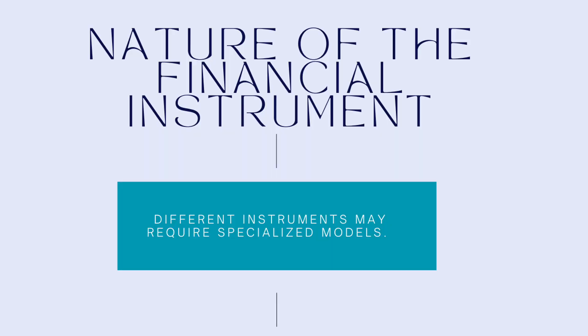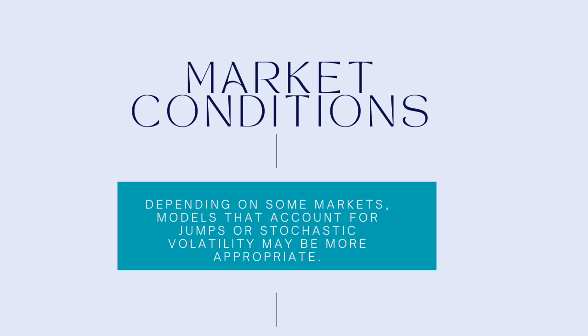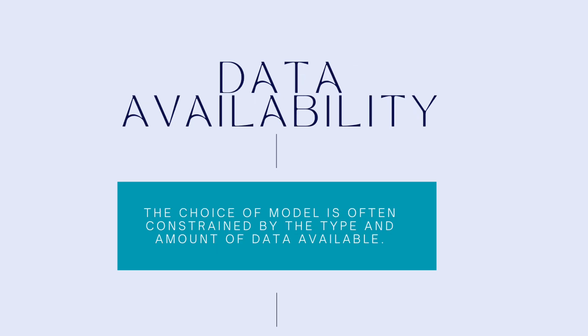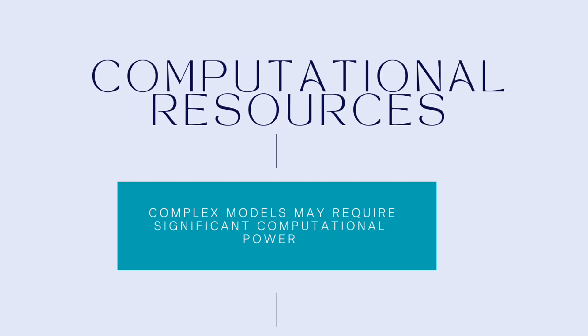Consider the nature of the financial instrument — whether it's an option, a bond, or equity. Some may require specialized models; structured products may require a combination of many models. In volatile or uncertain markets, models that account for jumps or stochastic volatility, like the Heston or Merton models, may be more appropriate. Data availability often constrains model choice based on the type and amount of data available. Finally, consider computational resources — complex models may require significant computational power, influencing their feasibility.